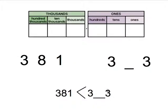So I'm trying to compare 381 and some number that I don't know. I know it has a 300, but it hasn't been finished. I know that the 381 has to be less than the other 300 number.